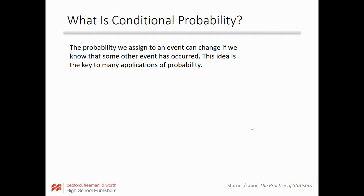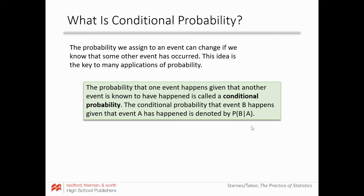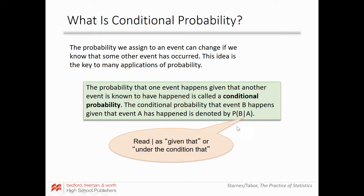To start, what is conditional probability? The probability we assign to an event can change if we know that some other event has occurred. This idea is the key to many applications of probability. The probability that one event happens given that another event is known to have happened is called the conditional probability. The conditional probability that event B happens given A has happened is denoted P(B|A), read as 'the probability of B given A.'